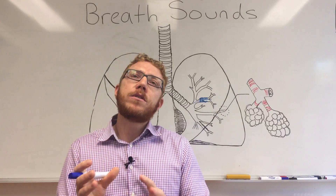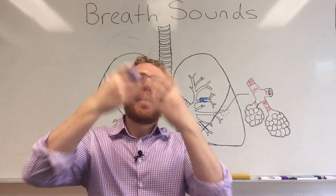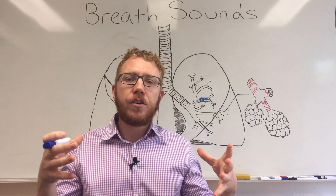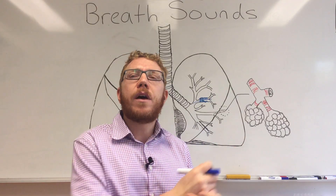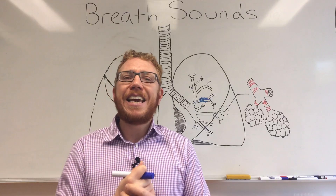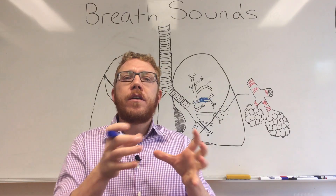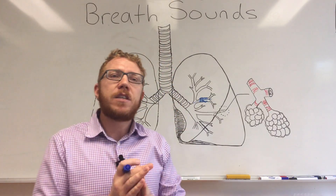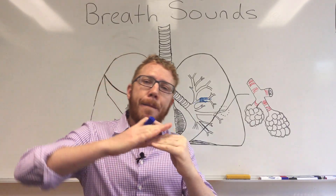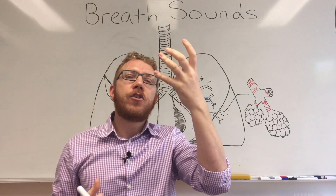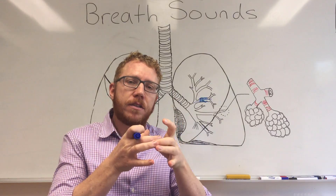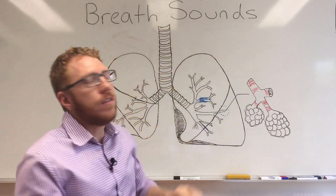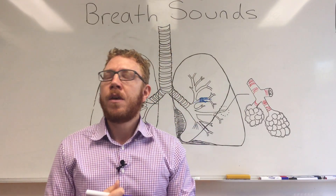Stridor is more commonly on inspiration because it's associated with the bigger airways. The bigger airways become smaller on inspiration and bigger on expiration, which is the reverse of what we saw with wheezing. We can categorize stridor into three main areas: above the glottis (supraglottis/laryngeal), at the glottis itself or just under the vocal cords, or further down in the trachea.